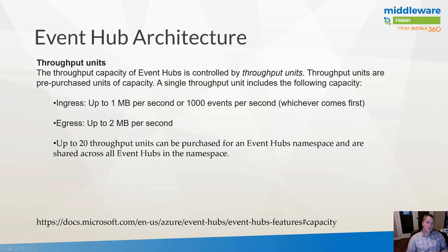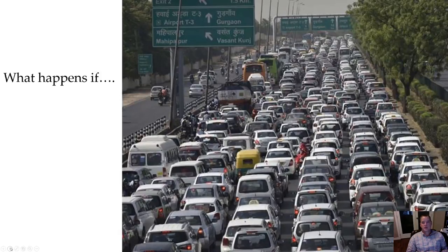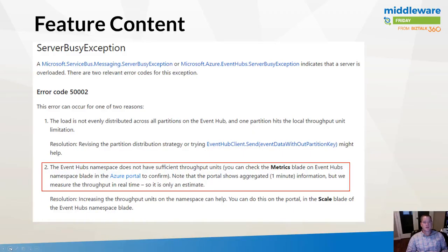A throughput unit also provides the ability to egress up to two megabytes per second. By default, through the Azure portal, a customer can provision up to 20 throughput units per namespace, shared across all Event Hubs within that namespace. If you require more than 20 throughput units, you are able to contact Microsoft to have that limit exceeded. Part of the challenge with this architecture is that it still involves an element of building for peak, and hitting those upper thresholds can result in a server busy exception.